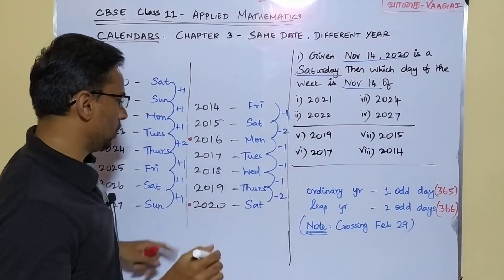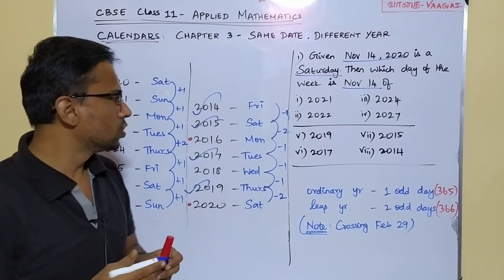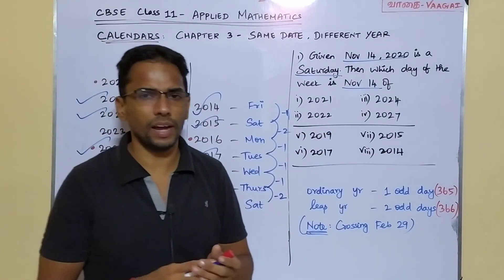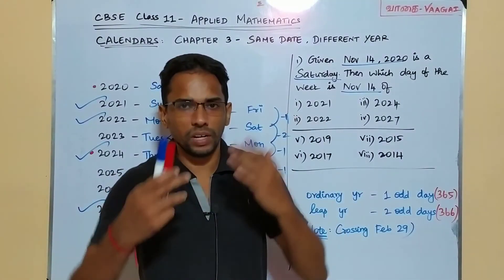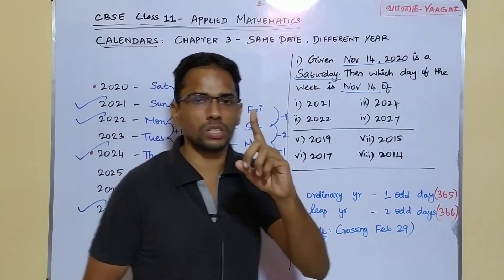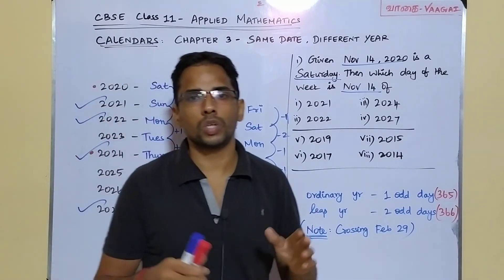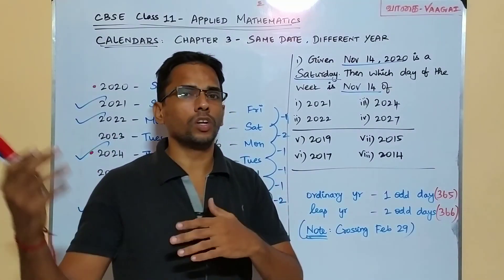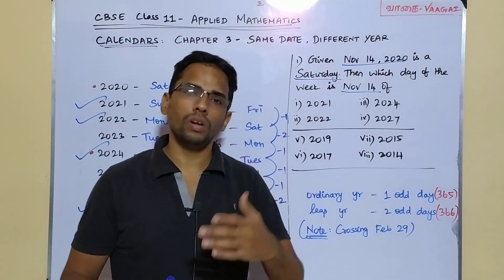So the answers for Group 2: 2019 is Thursday, 2017 is Tuesday, 2015 is Saturday, and 2014 is Friday. I hope you are clear with how we are solving all these problems. It is all based on whether we are crossing February 29 or not. If crossing Feb 29, account for two odd days; if crossing only Feb 28, just one odd day — that gives your answer clearly. We will have a continuation of this calendars topic in Chapter 4. See you soon there. Thank you so much.